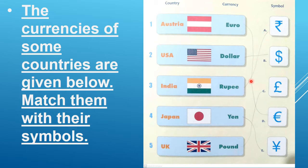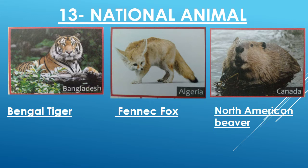You have to match India with number A. Japan — you have to match Japan with yen. And this is number 5. When you have to match it with yen, look at the symbol carefully. Number 5, UK.